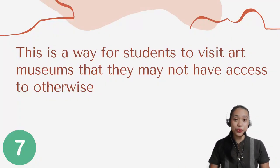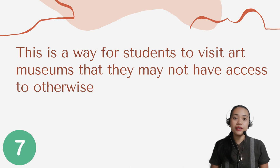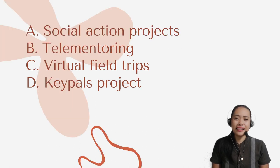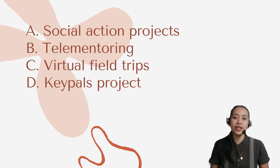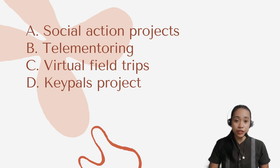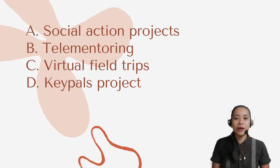Question number 7. This is a way for students to visit art museums that they may not have access to otherwise. Letter A: Social action projects. Letter B: Tele-mentoring. Letter C: Virtual field trips. Or letter D: Key pulse project.